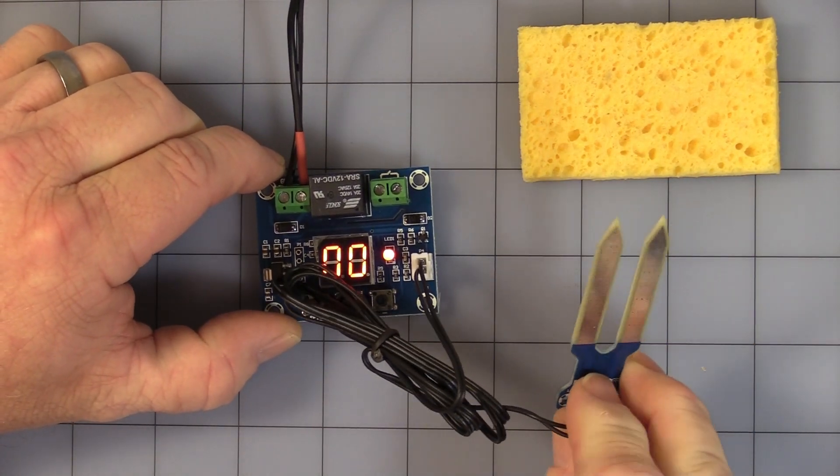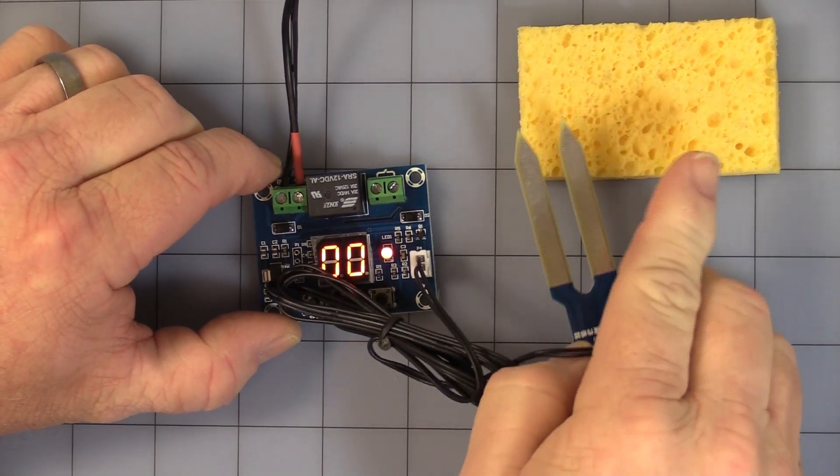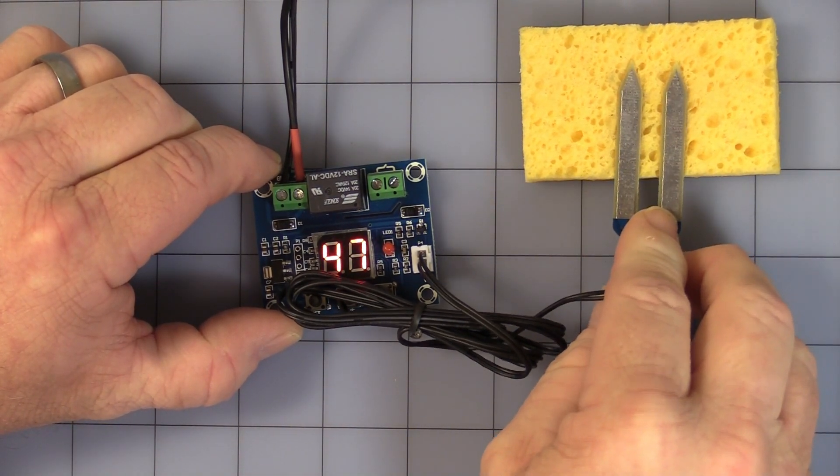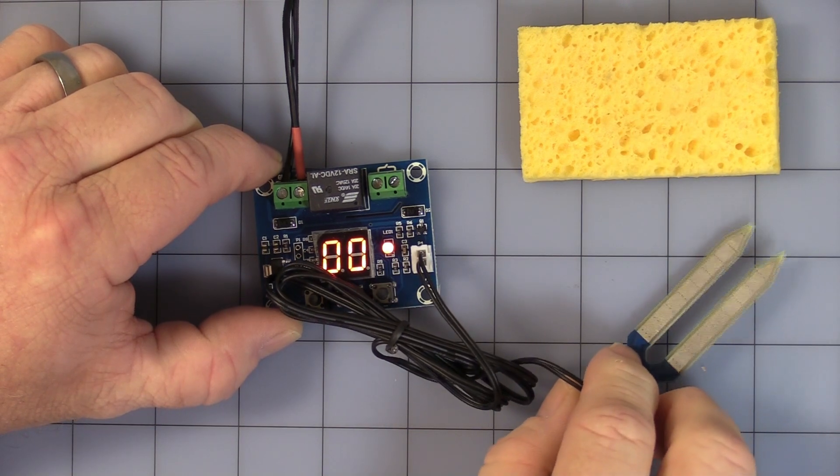So we have a sponge here to demonstrate. We touch it to the sponge. You can see the relay turns off because it hits a preset point.